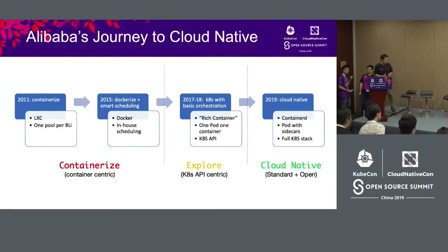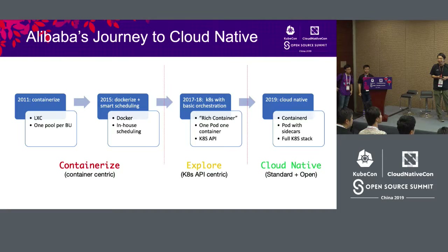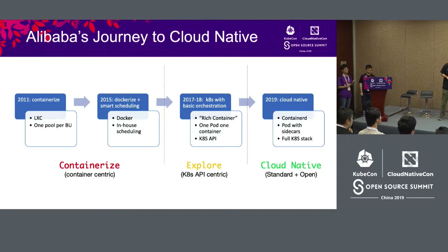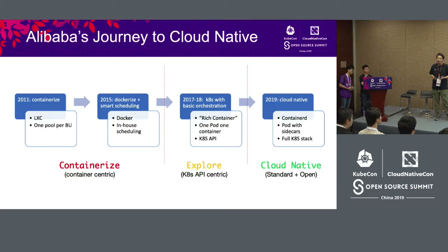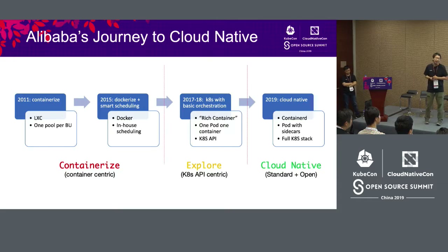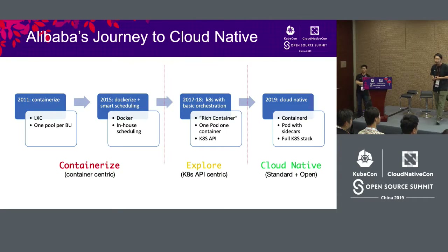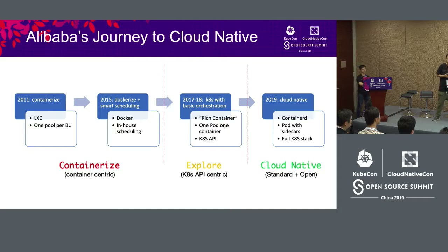I'll start with Alibaba's background. Alibaba started deploying containers a long time ago, as early as 2011. We call this phase 'container device.' There were no Docker technologies available at that time, so developers built something based on LXC. Many companies like Baidu had a similar matrix to address similar problems. This was the container phase as an upper layer.